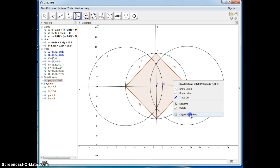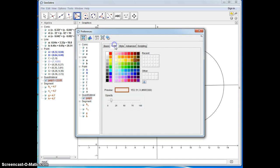I'm going to use my object properties. Right click on it and change the color. So I guess I'll go with blue. And I'm going to change the opacity and make it nice and dark.